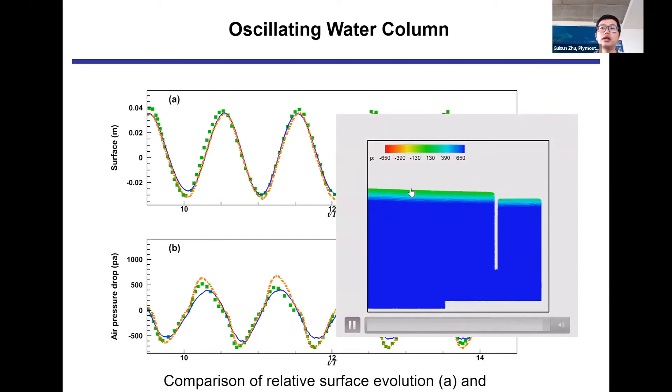Because the color means the pressure, we can find that outside the chamber, the free surface pressure is always consistent. However, the pressure inside the chamber is changing according to the water column moving up and down.